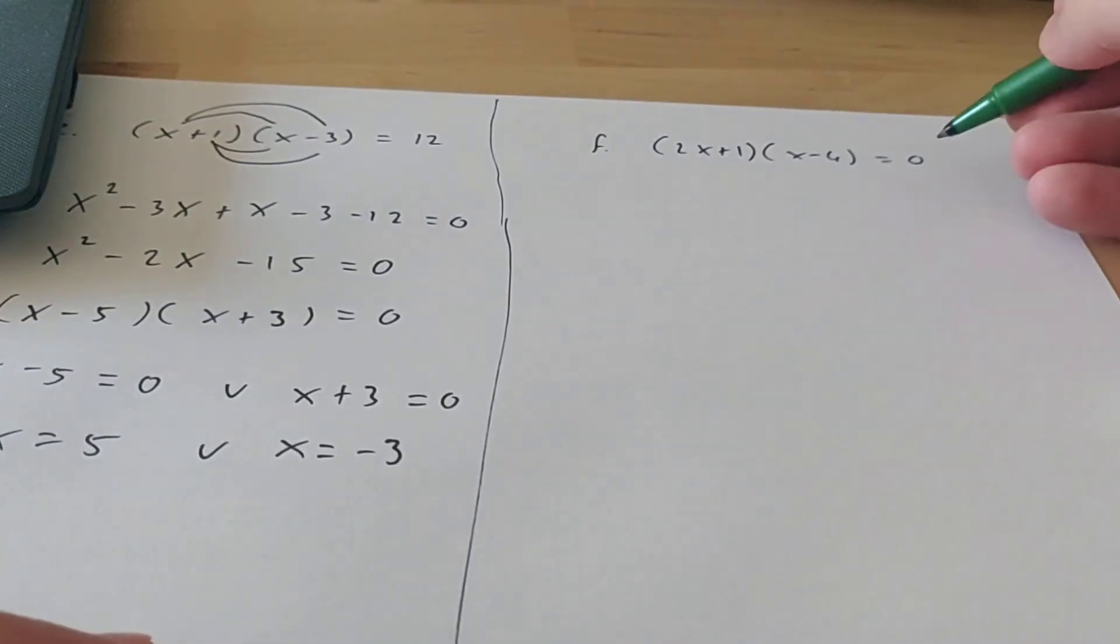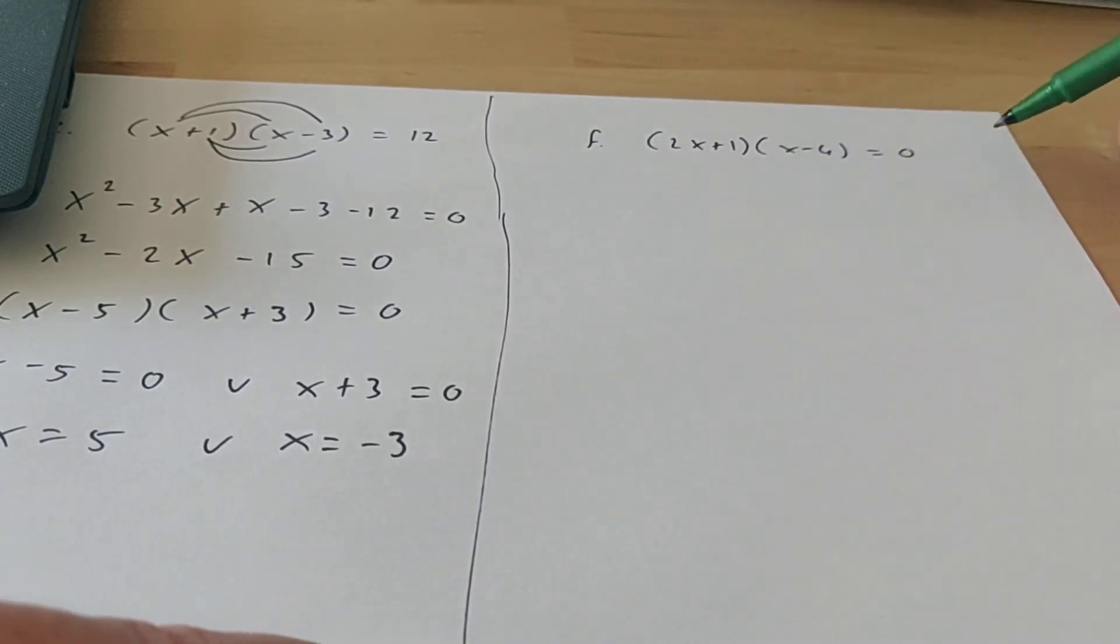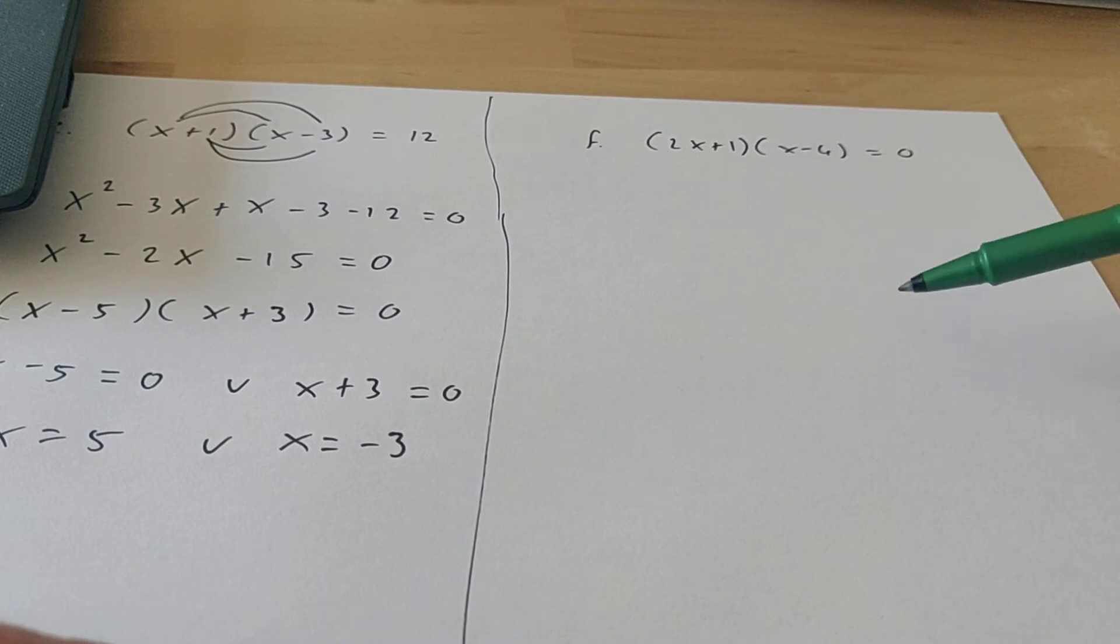Now I want to show you what happens if you already have a 0 here. If you already have a 0, then you don't have to work out the brackets. So don't start doing that, because otherwise you're going to have a really bad time. Maybe I'll show you here what happens if you actually do work out the brackets.